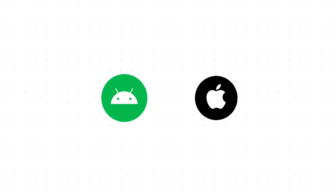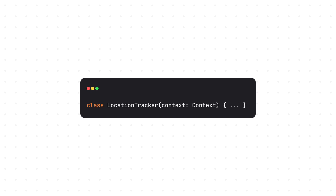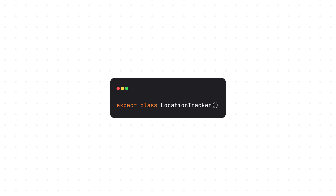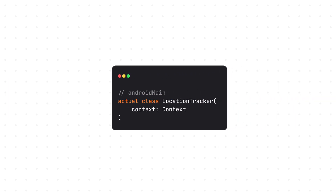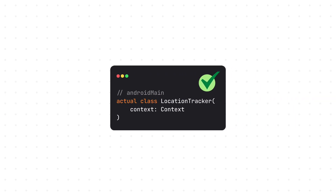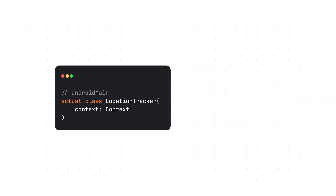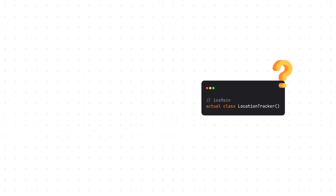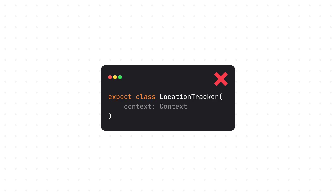When you're building an app for Android and iOS, you often find yourself in a situation where you need to pass the context to some Android-specific API. If you're using the expect and the actual mechanism and targeting Android, you'll probably end up thinking about the best possible way to do it. The Android target in most cases needs the context object while the iOS target doesn't know anything about it, which is why you cannot pass the context object directly as a parameter in the expect declaration.